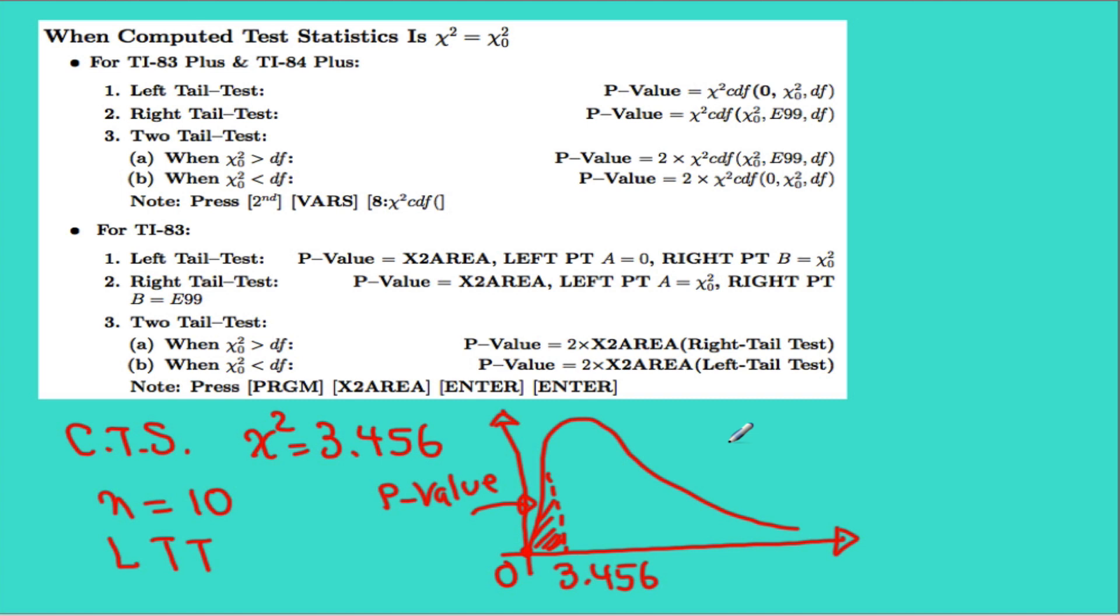For this we're going to use the function chi-square CDF, which is again in your TI calculator under second vars. So this will be chi-square CDF with the lower value of 0, upper value of 3.456, followed by degrees of freedom which is 9, and the answer for this is 0.0566.